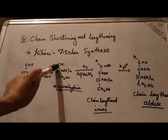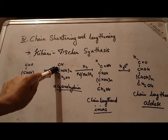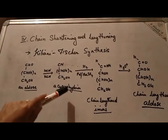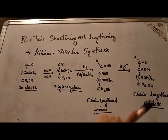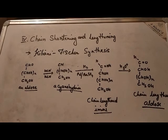The cyanohydrin is formed as a mixture of stereoisomers at the new chiral carbon — the new chiral center. That is why it results in the formation of two new aldoses.